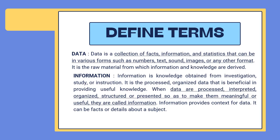Here two terms are very important: the first one is data and the other is information. Data means it is a collection of facts, information and statistics that can be in various forms such as numbers, text, sound, images or any other format. It is a raw material from which information and knowledge are derived.